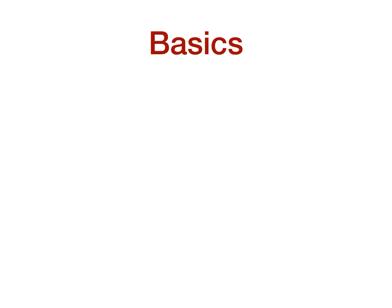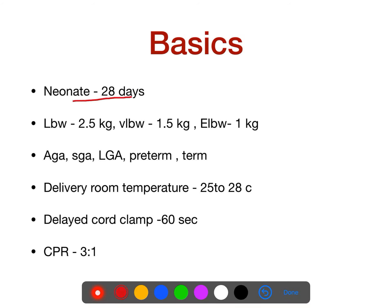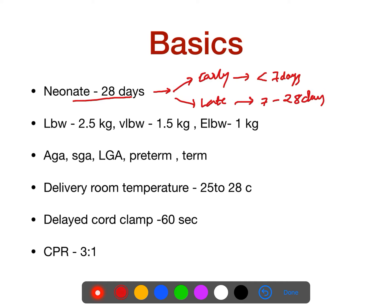First thing: what is a neonate? A neonate is a baby having less than 28 days of life. It is classified into early neonate and late neonate. Early neonate is babies having less than 7 days of life, and those babies having 7 to 28 days is late neonate.